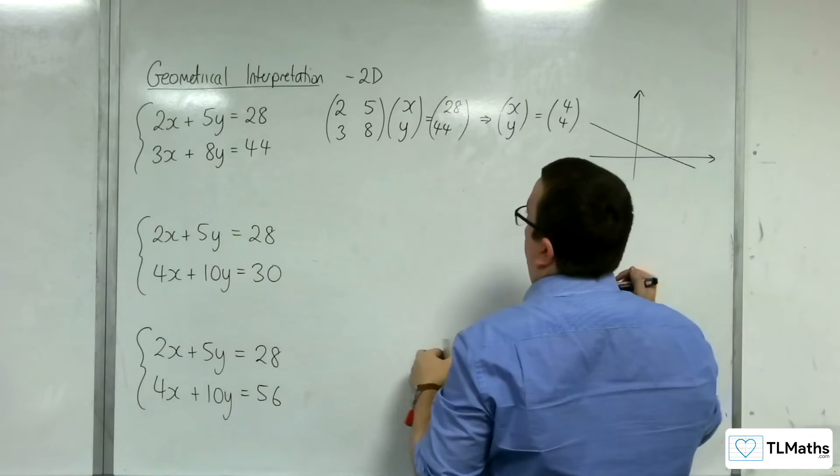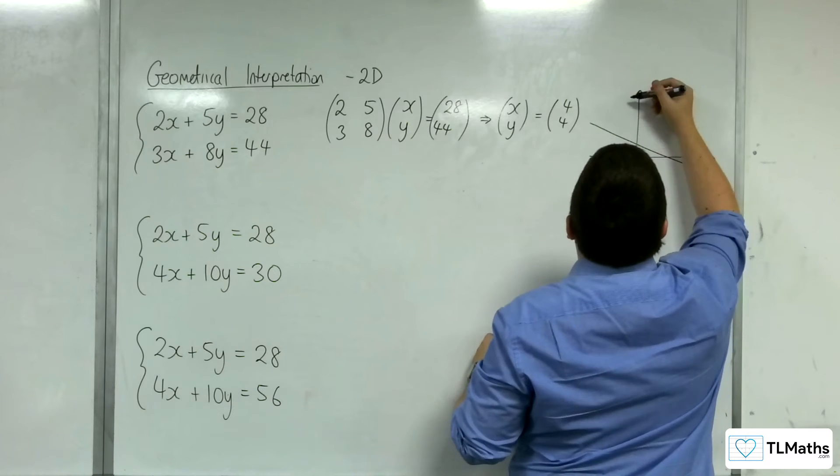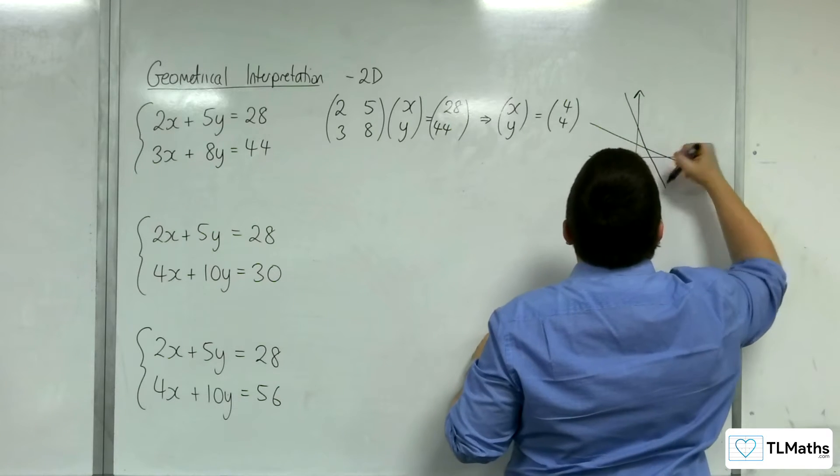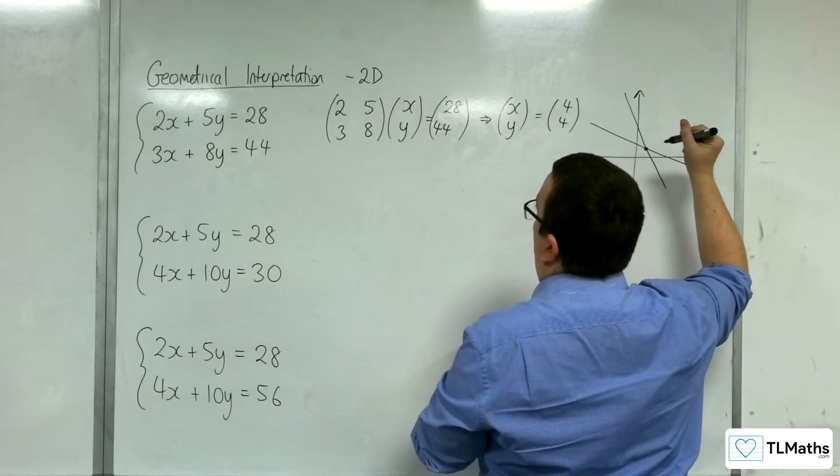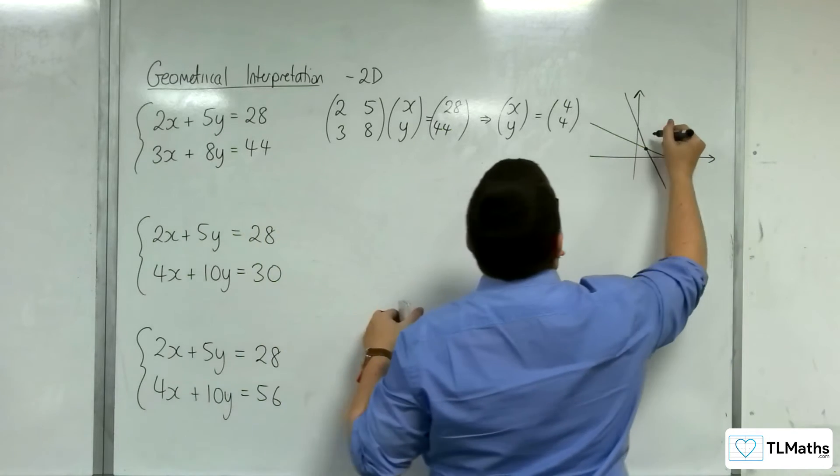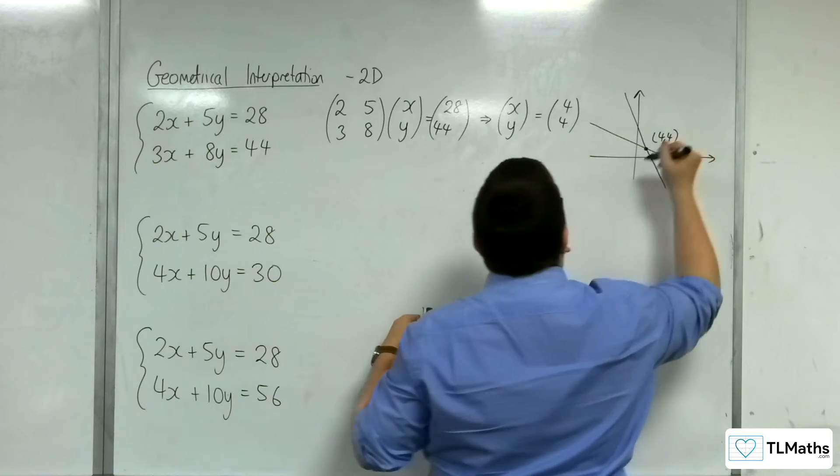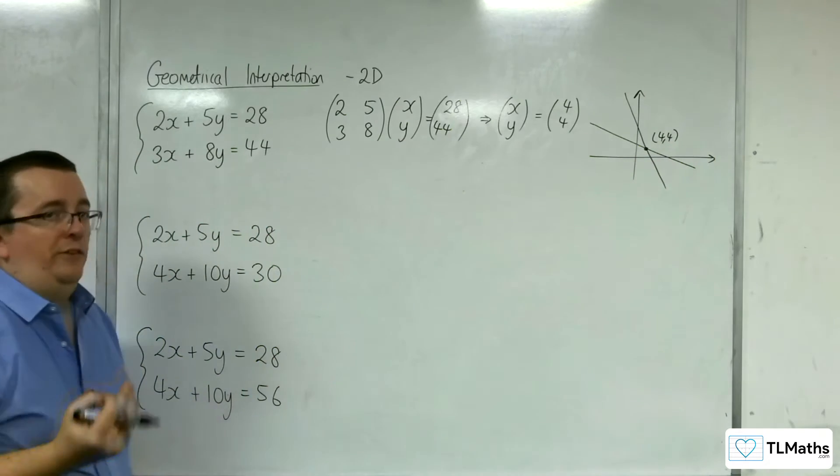3x plus 8y is equal to 44. We'll be intersecting this other one. So something like this, say. At this point, 4, 4. Okay, so you get this distinct solution.